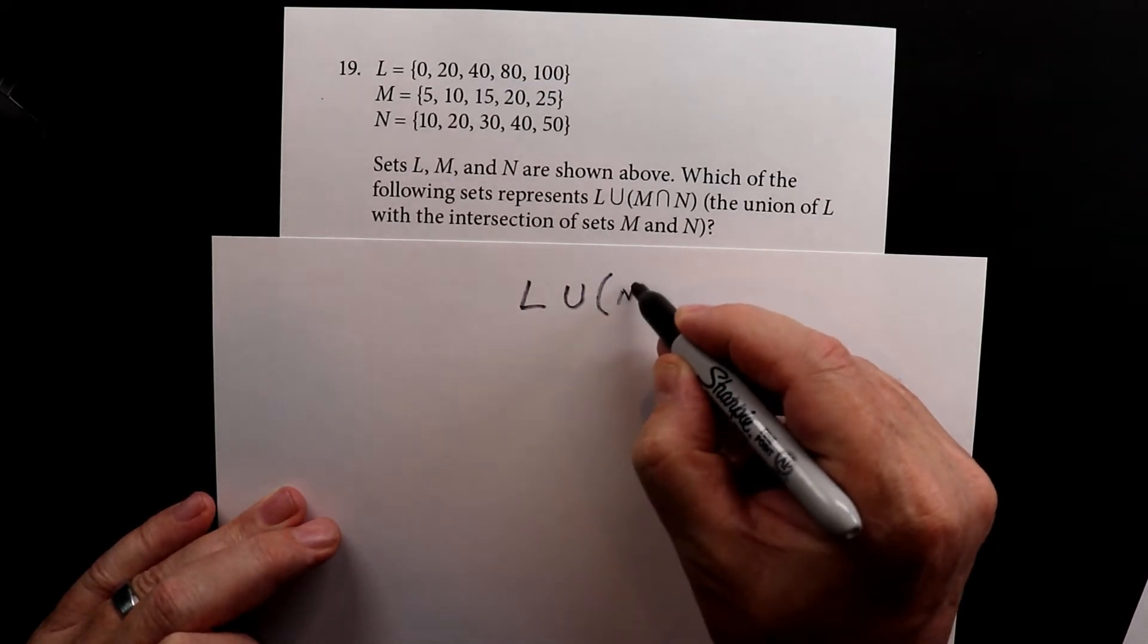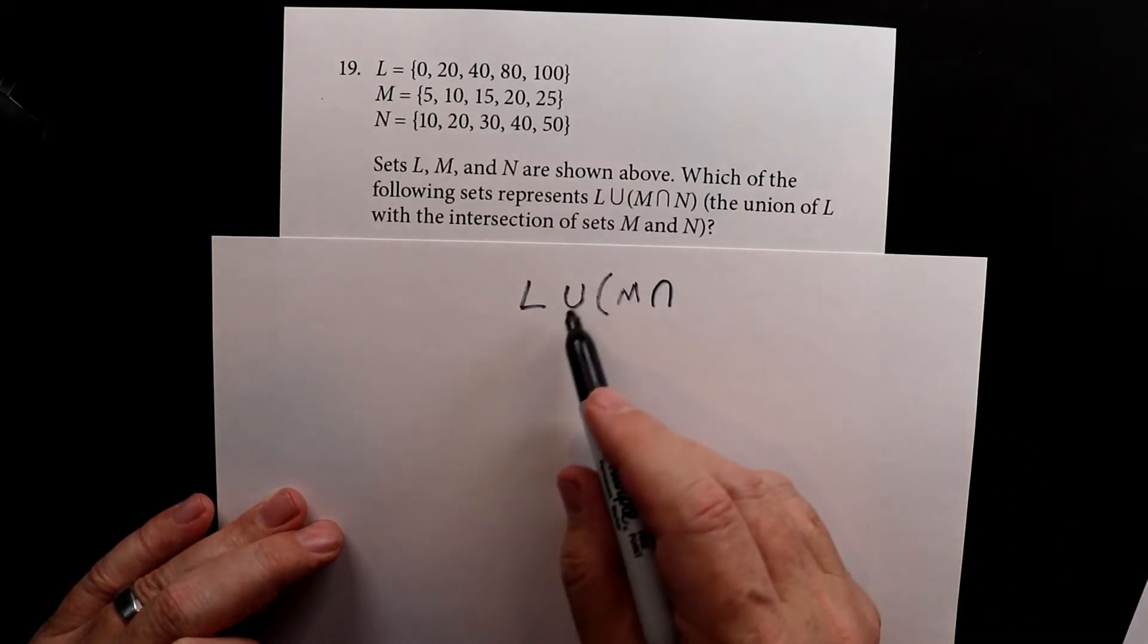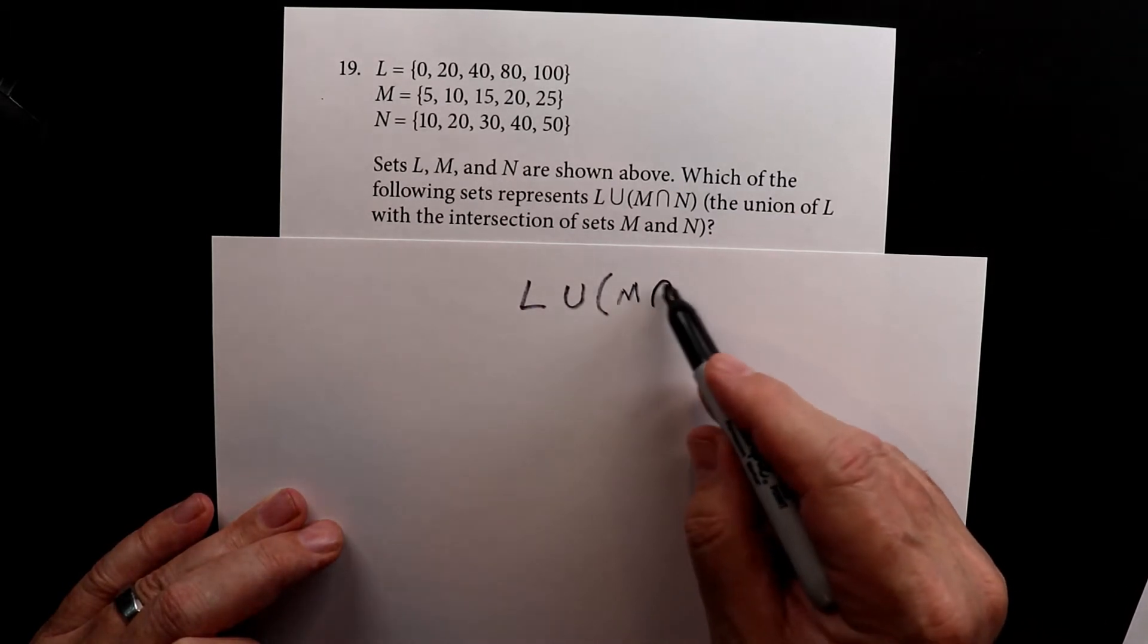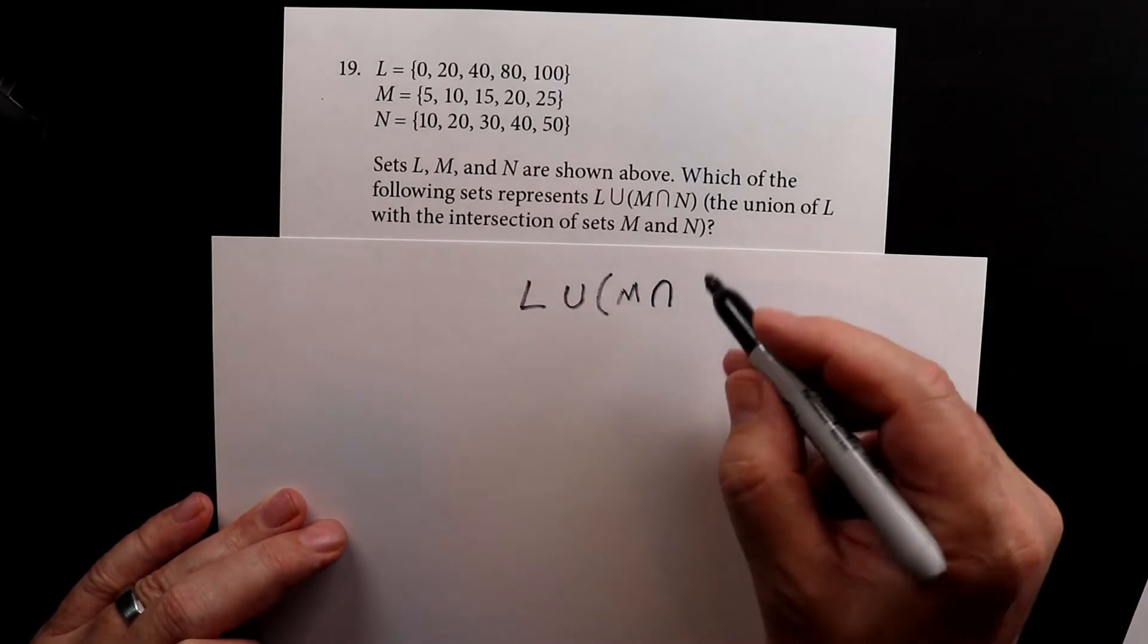And then we have M and then intersection. And the way I remember this, U, that looks like a U, and this looks like a lowercase n. So intersection. Intersection N.